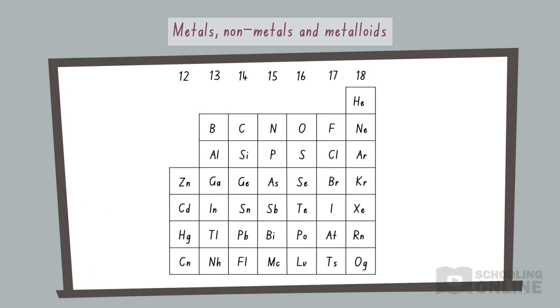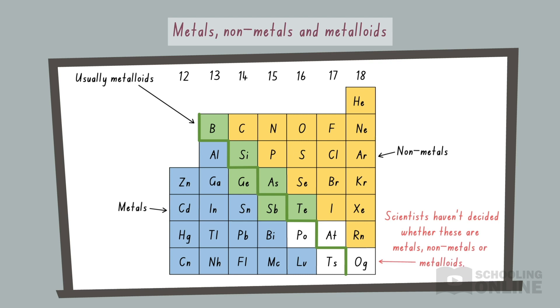We can identify metalloids in the periodic table by drawing a staircase. Starting left of boron, we draw lines alternating down and right until we reach the bottom. Elements that border this staircase are usually considered metalloids. This includes boron, silicon, germanium, arsenic, antimony, and tellurium. Scientists are still debating about whether some elements, such as polonium and astatine, are also metalloids, so you won't be asked about them in HSC chemistry. When using this method, it's important to remember that aluminium is a metal. Therefore, aluminium is an exception to the staircase rule.